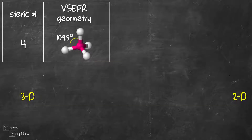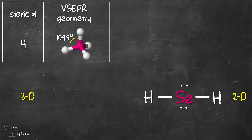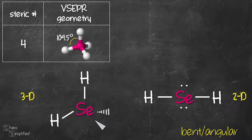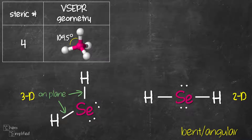Still at steric number 4, we now look at H2Se. In this Lewis structure, you can see it has steric number 4 due to four groups: two single bonds and two lone pairs. Since we have two lone pairs on the central atom, the shape is no longer tetrahedral — instead it's bent or angular. To draw H2Se in 3D, we start with Se in the center, draw four bonds out at tetrahedral angles, place the two hydrogens on the same plane, remove the two extra bonds, and add in the lone pairs. Molecules with bent geometry will have two bonds on the same plane.